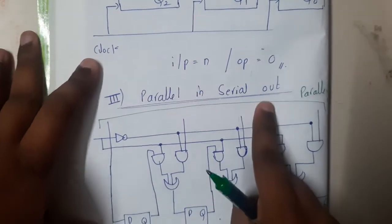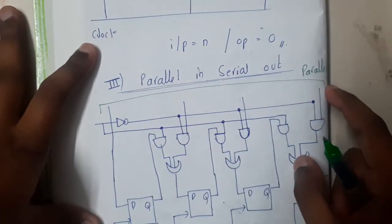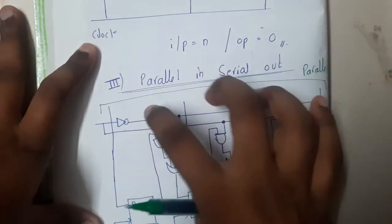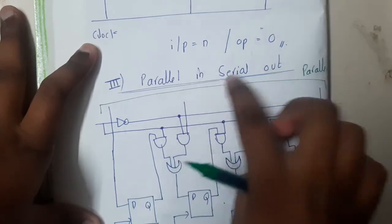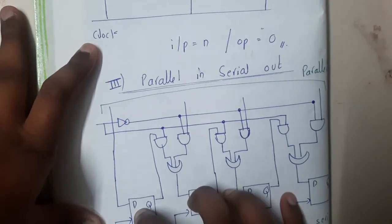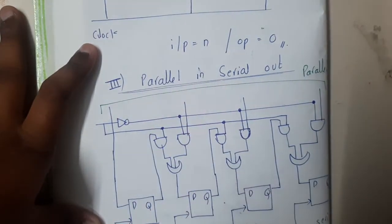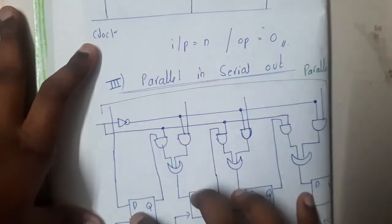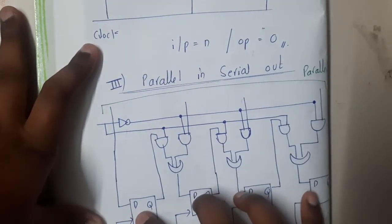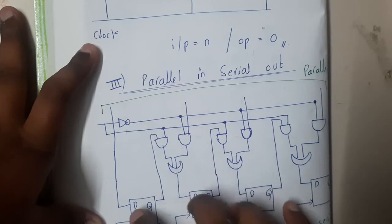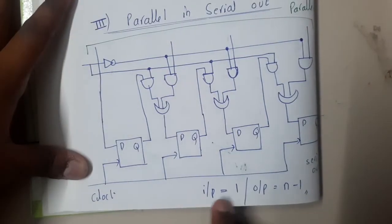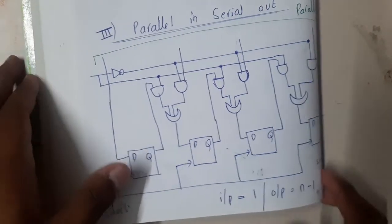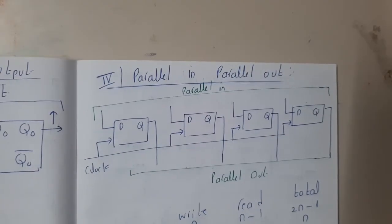For Parallel In Serial Out, you push all bits inside at once in a single clock, and then pop them out one by one. So it takes 1 clock for input and n minus 1 clocks to shift them all out as output.